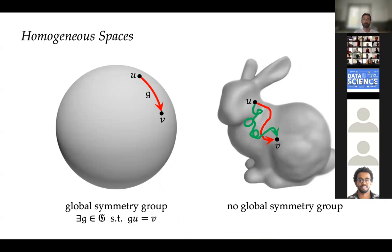Recall that when Taco described groups, there was a prominent notion of homogeneous spaces — where you can take any point and transform it into another by means of a group element. On the sphere, for example, I can rotate any point u to any other point v with a unique group element. On general manifolds we don't have this luxury. We cannot find an element of the group that globally moves from one point to another. The shortcoming is that we now need to talk about paths, and there are multiple ways to go from u to v.